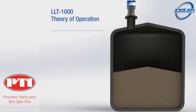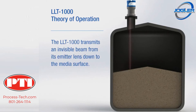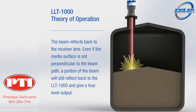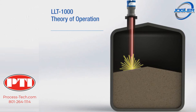The LLT-1000 transmits an invisible beam from its emitter lens down to the media surface. The beam reflects back to the receiver lens. Even if the media surface is not perpendicular to the beam path, a portion of the beam will still reflect back to the LLT-1000 and give a true level output.